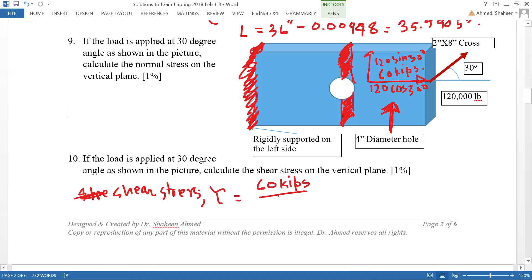The area of that piece is 2 times 4, we calculated that before, 8 inches square. So basically 60 divided by 8 is 7.5 ksi, so that is the shear stress calculation.